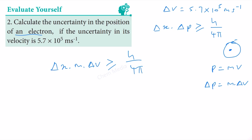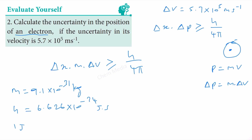Here they have mentioned an electron, and we know that the mass of an electron is 9.1 times 10 to the power minus 31 kg. Planck's constant h is equal to 6.626 times 10 to the power minus 34 joule second. And we know that 1 joule is equal to 1 kilogram meter square per second square.